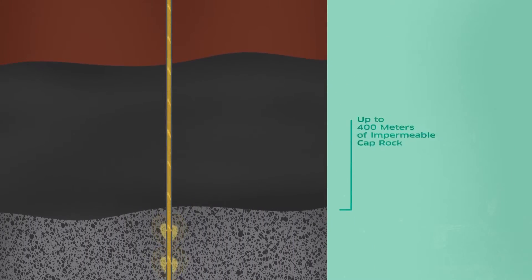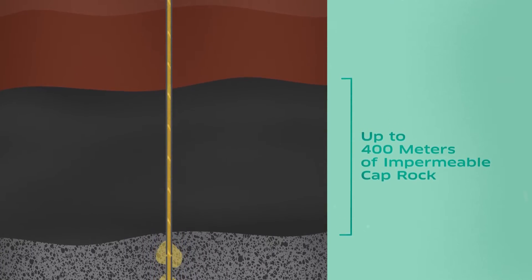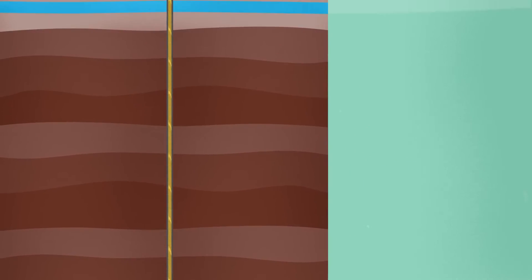A non-porous, impermeable caprock makes it impossible for CO2 to seep upwards. This caprock extends for hundreds of meters, permanently sequestering the CO2 below.